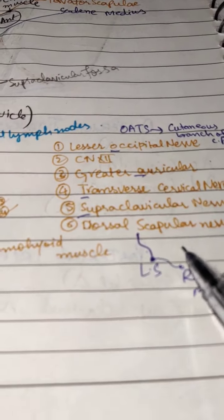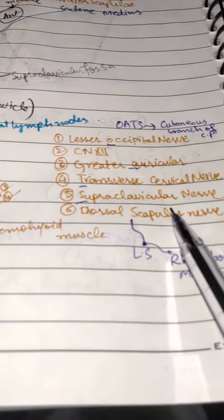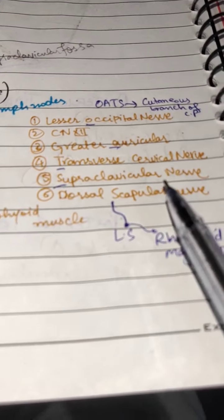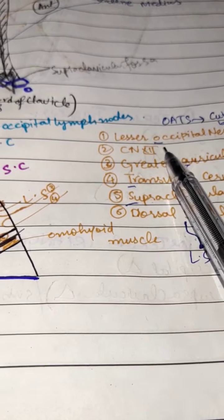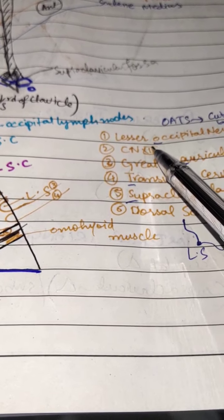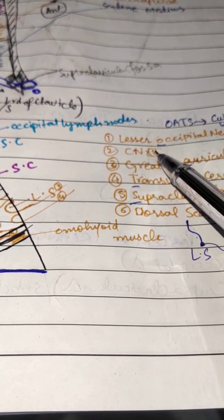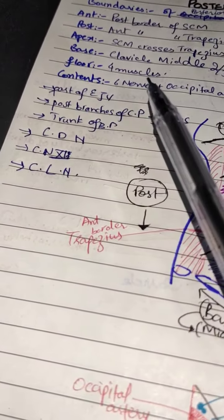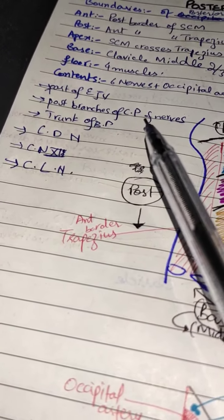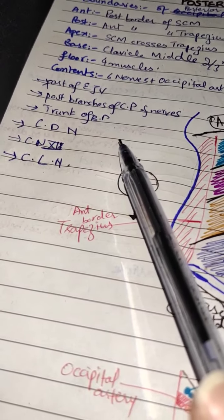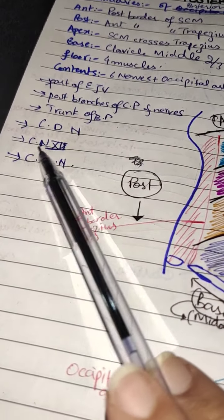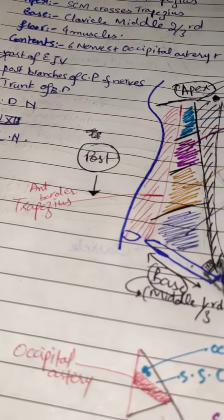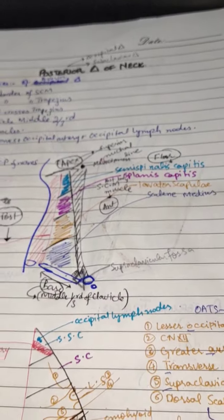To summarize, the contents of the posterior triangle of the neck include the dorsal scapular nerve, cranial nerve number 11 (accessory nerve), part of the external jugular vein, posterior branches of the cervical plexus of nerves, trunk of the brachial plexus, dorsal scapular nerve, and cervical lymph nodes. That completes the posterior triangle of the neck.